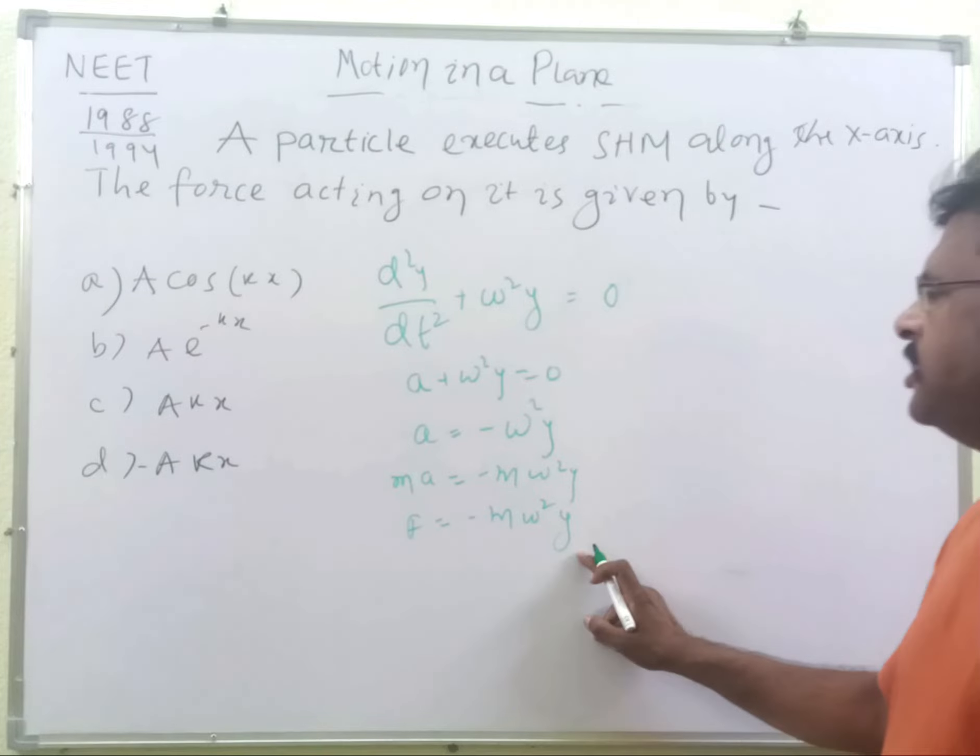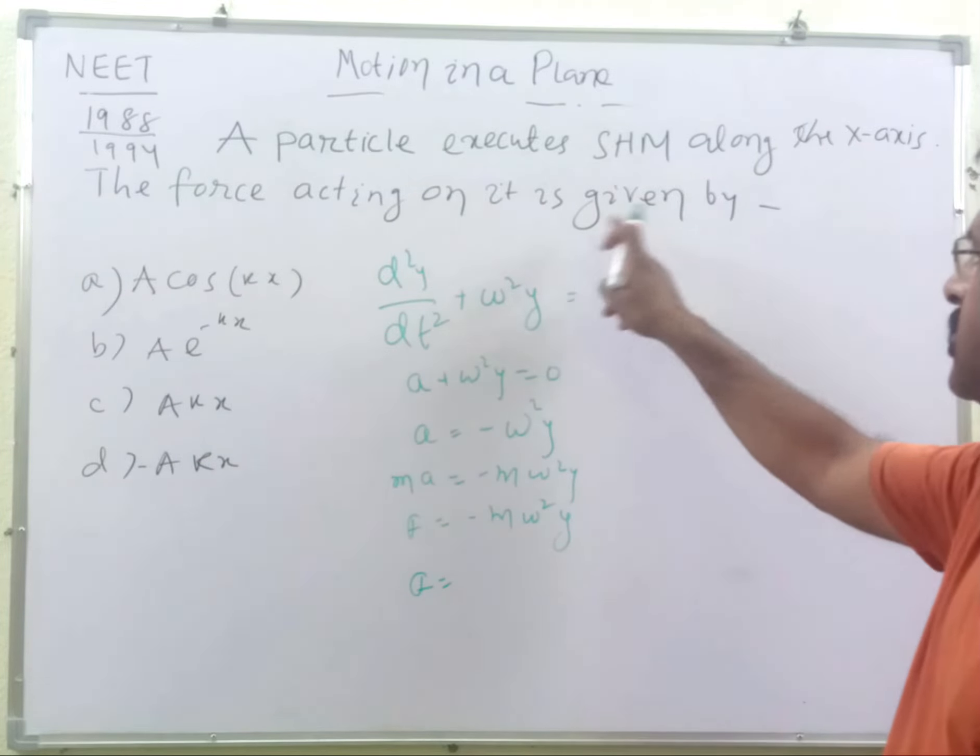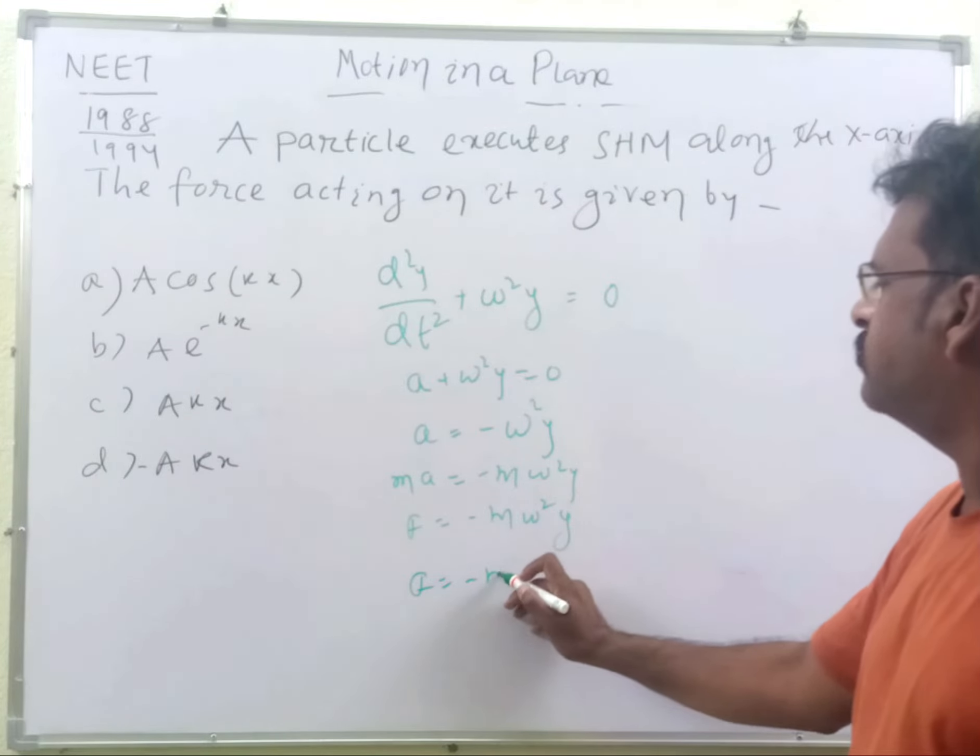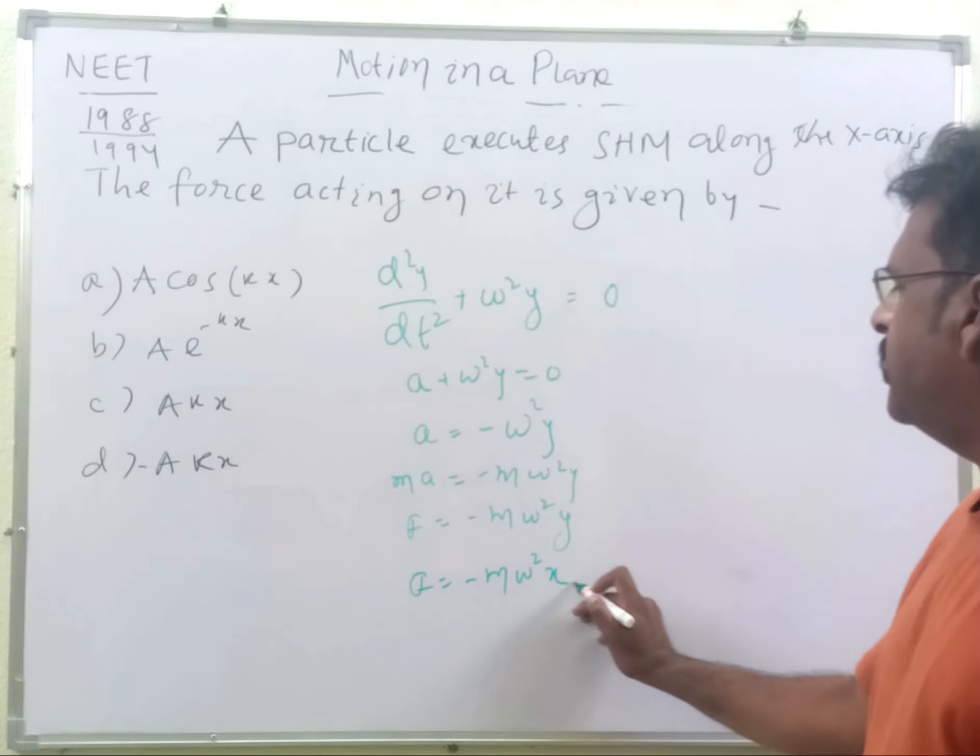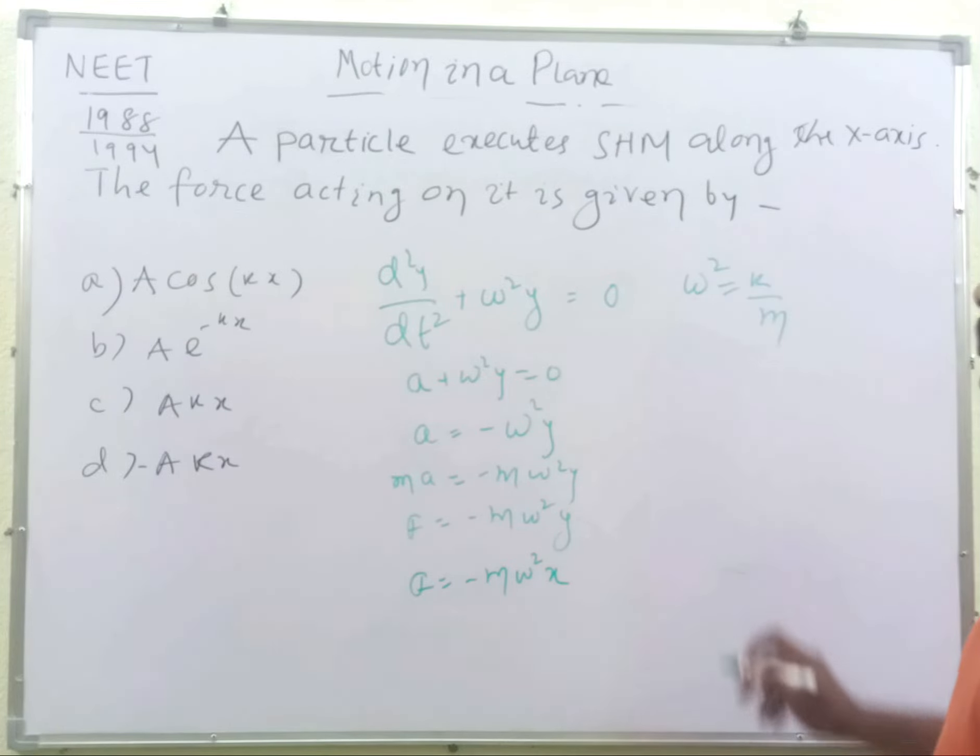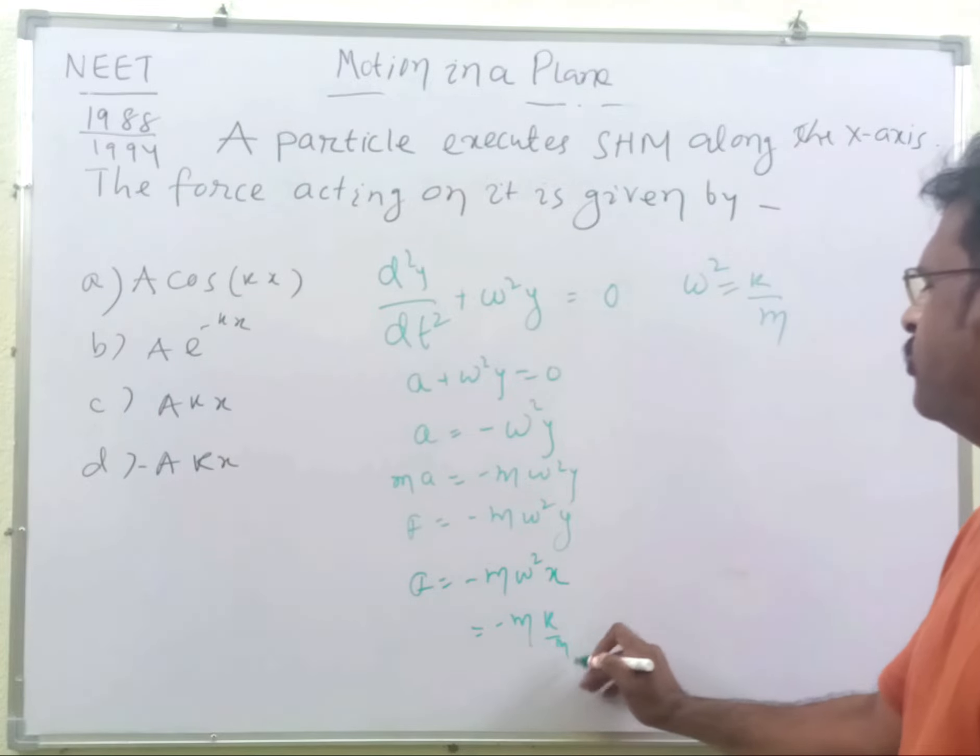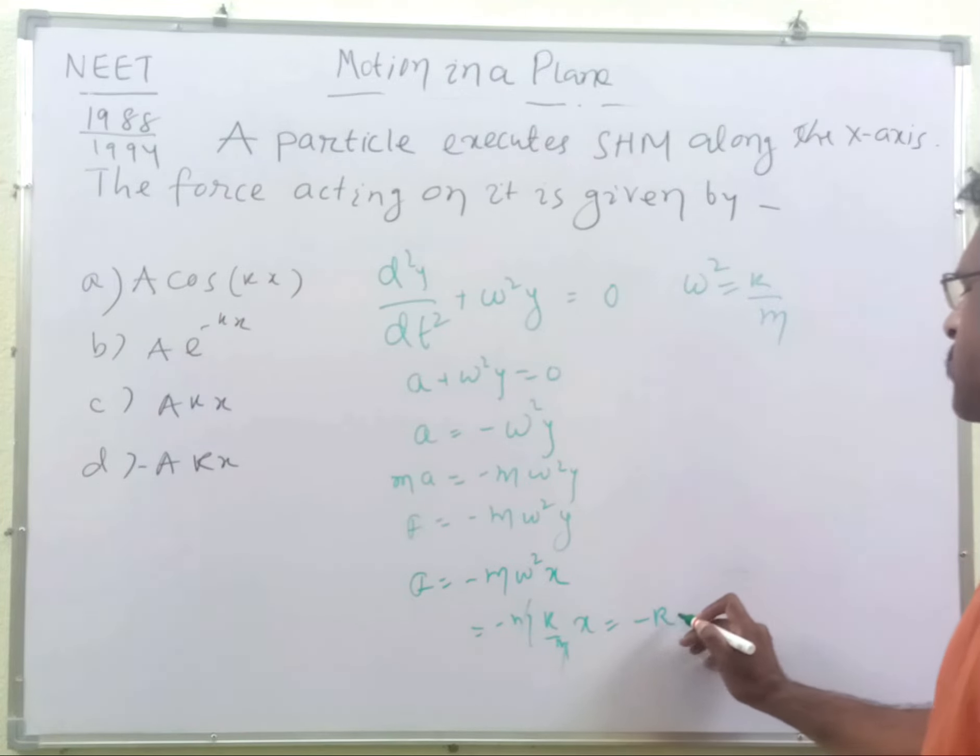And if it is in the x direction, we may write the body is moving in the x direction, so mω²x. And what is this ω²? ω² = k/m. So this is -m × k/m, where k is the force constant, and this is x. So the m's cancel out and this is -kx.